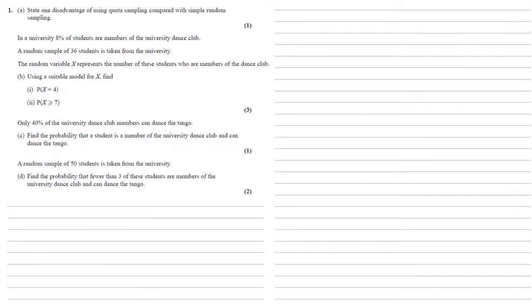Only 40% of the University Dance Club members can dance the tango. So part C, we need to find the probability that a student is a member of the University Dance Club and can dance the tango. So to find the probability of one thing and another thing, we're going to multiply them together. So our probability is going to be the 0.08, which is the probability that they're in the dance club, times by the 0.4, which is the probability they can dance the tango, which gives us an answer of 0.032.